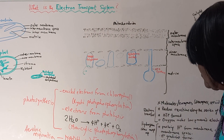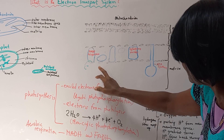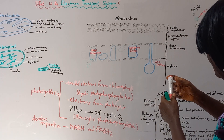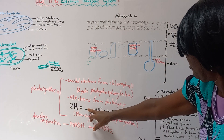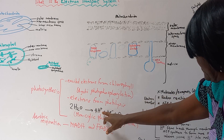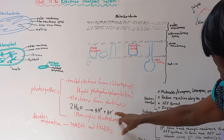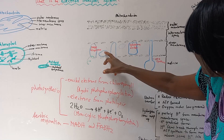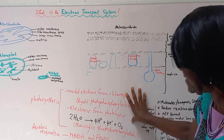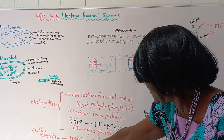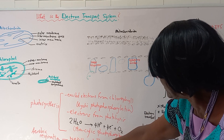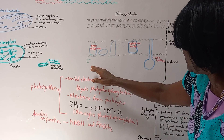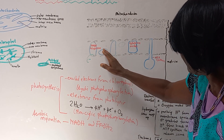Electrons also feed the electron transport system through the photolysis of water — water molecules break down into hydrogen ions and electrons, and those electrons move through the system. This applies to both photosynthesis and respiration. In respiration, electrons are brought in by NADH and FADH₂ to feed the system.